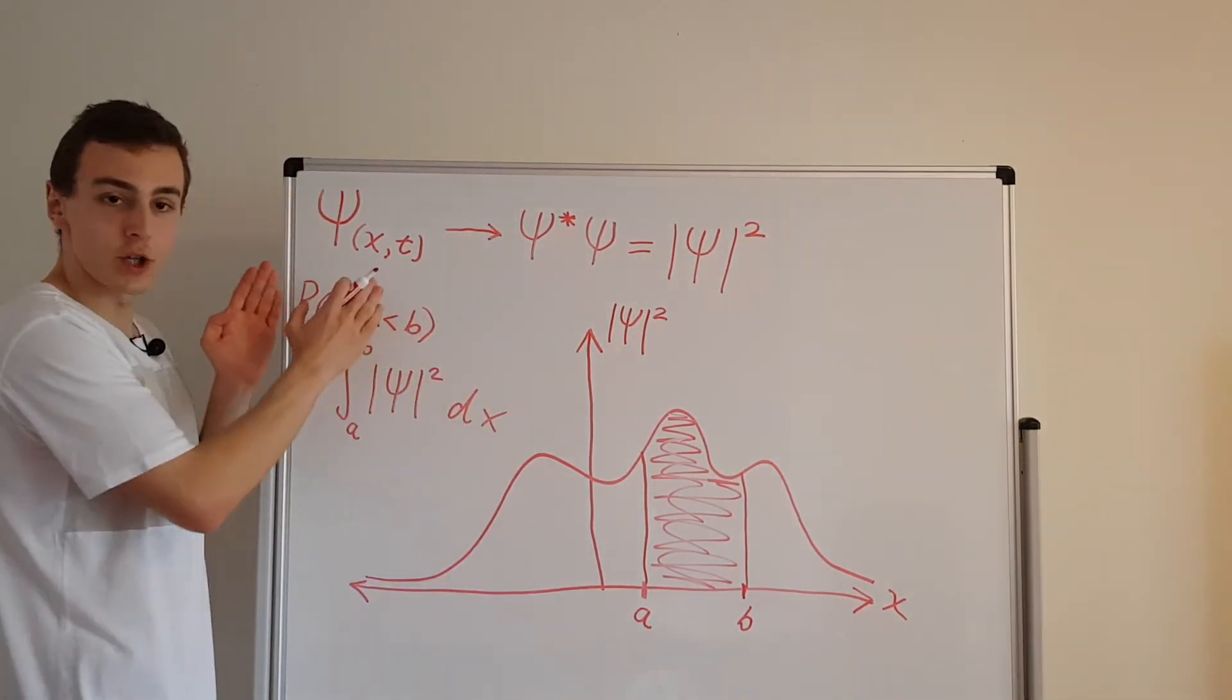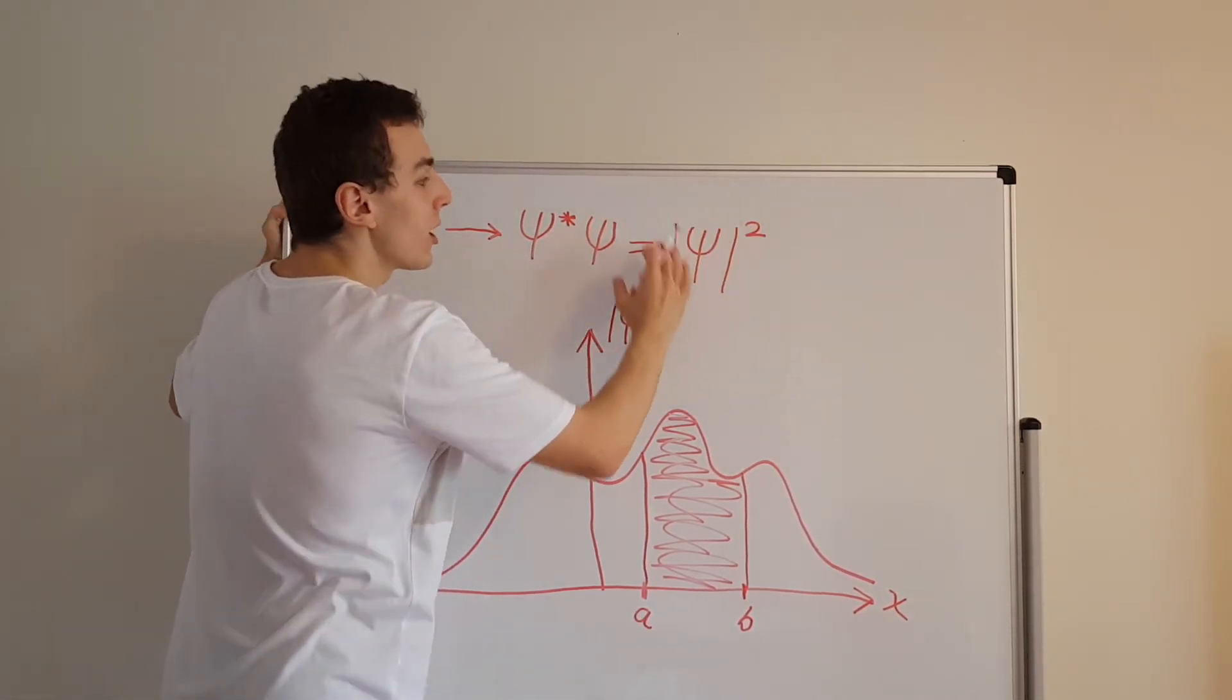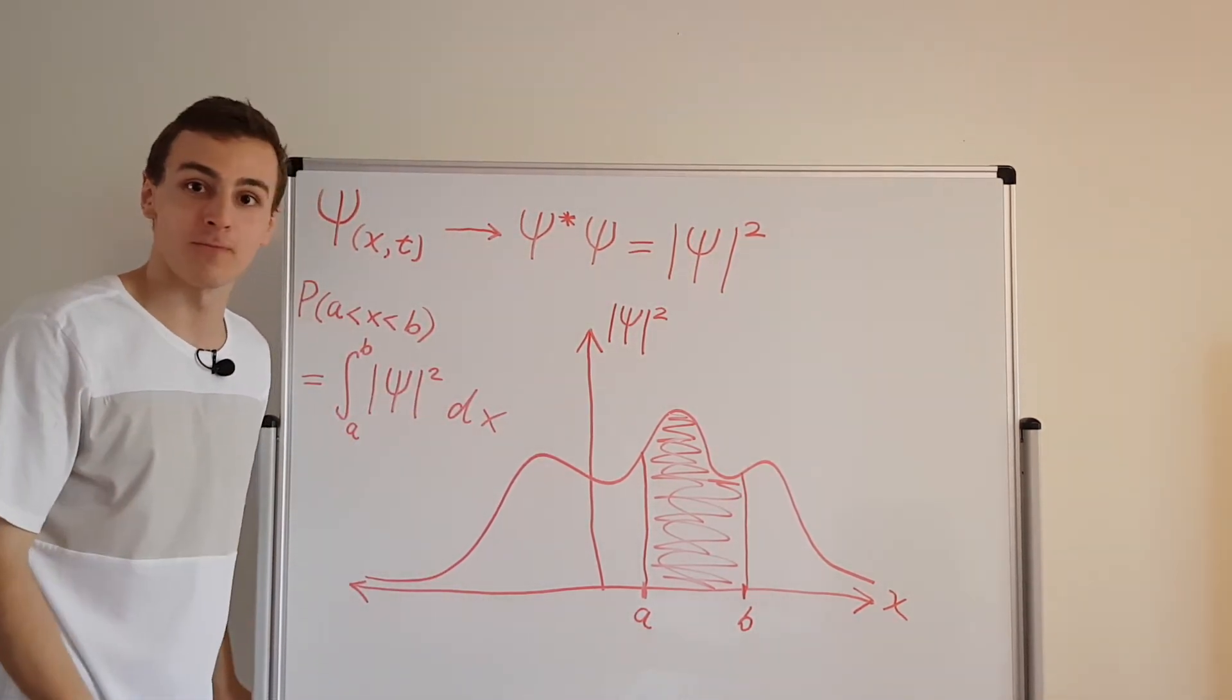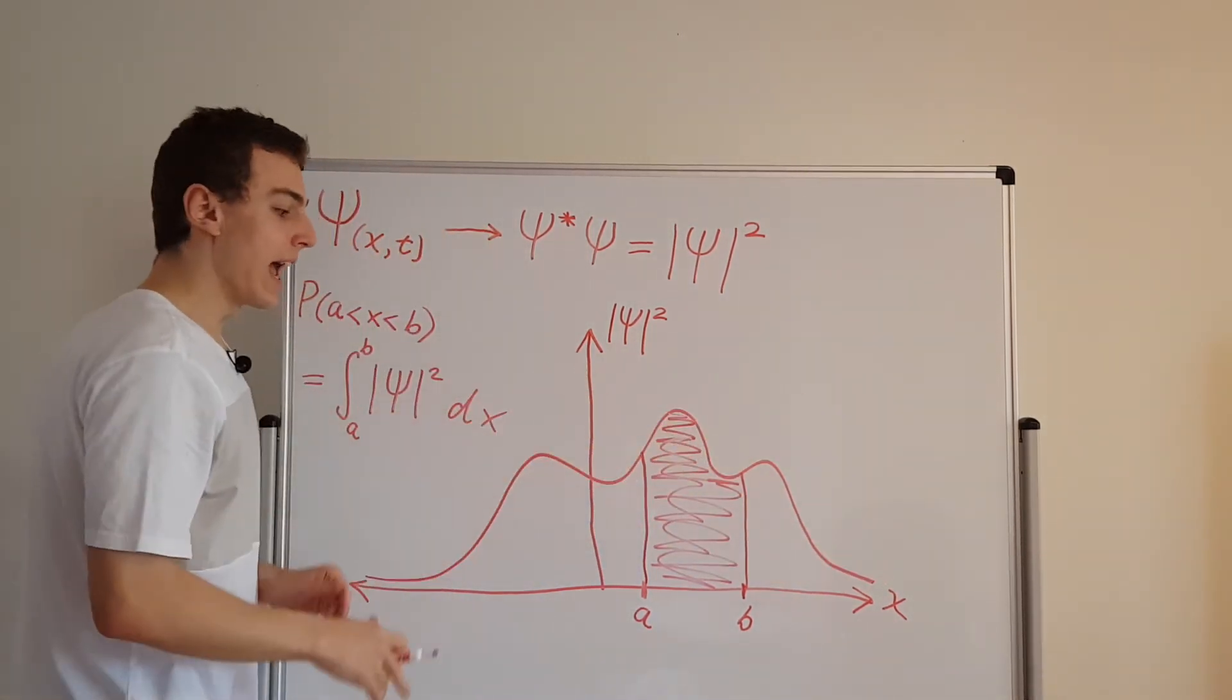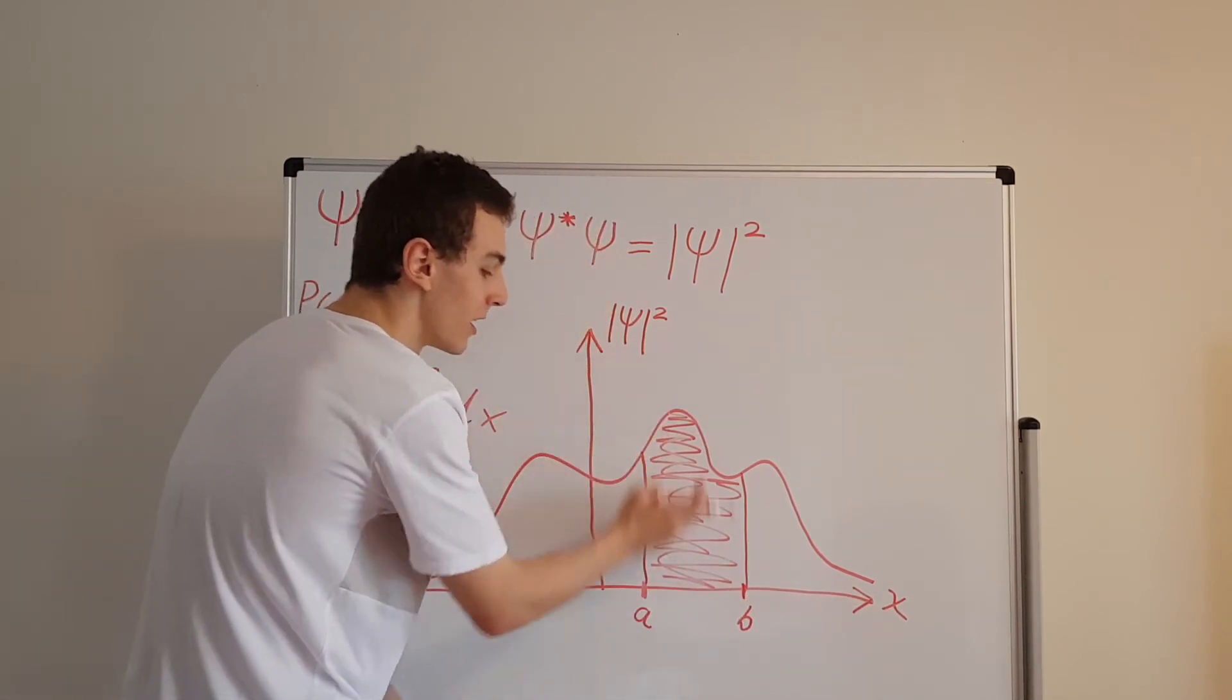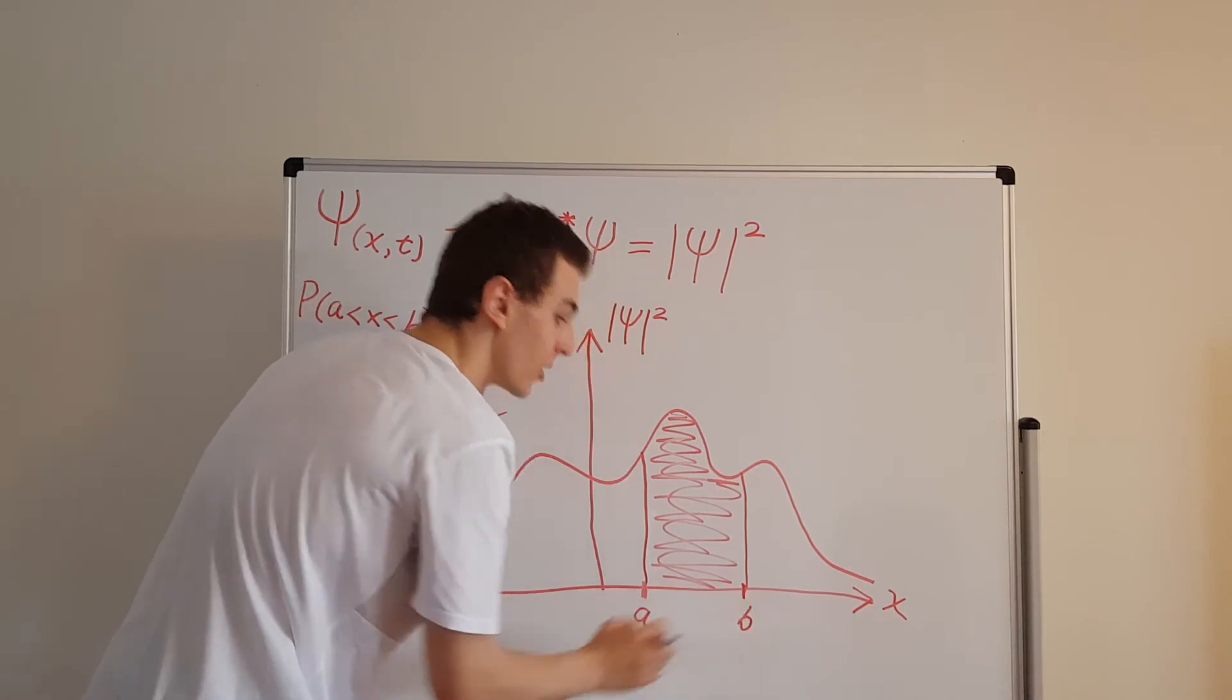So we start off with the wave function, we multiply by its complex conjugate. That gives us the square amplitude, and then that square amplitude we can interpret as the probability density function. If we plot this probability density function, we get some curve, and then if we take an interval on the x-axis, and we find the area under the curve over this interval, that is the probability of measuring the particle in between here and here.